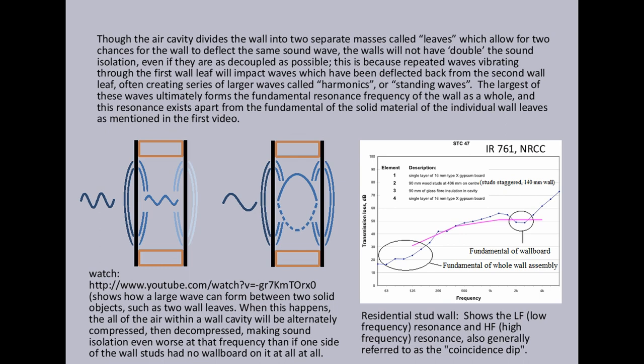Though the air cavity divides the wall into two separate masses called leaves, which allow for two separate chances for the wall to deflect the same sound wave, the walls will not have double the sound isolation, even if they are decoupled as much as possible. This is because repeated waves vibrating through the first wall leaf will impact waves which have been deflected back from the second wall leaf, often creating a series of larger waves called harmonics, or standing waves. The largest of these waves ultimately forms the fundamental resonance frequency of the wall as a whole, and this resonance exists apart from the fundamental of the solid material of the individual wall leaves as mentioned in the first video.